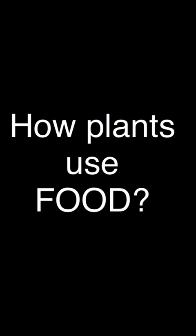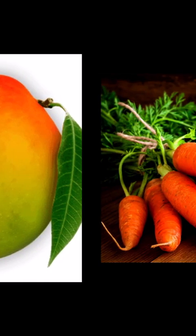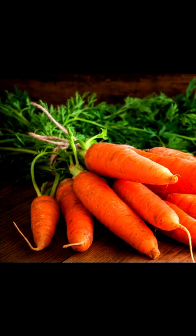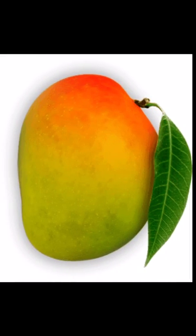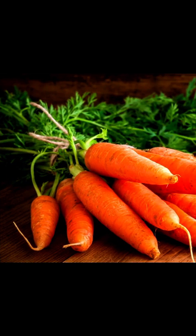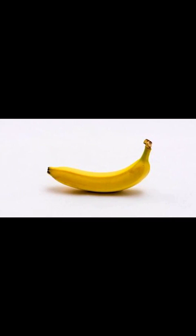Now, how do plants use food? The food prepared by a leaf is called sugar. This food is transported throughout the plant by stem and branches. A plant uses some amount of the prepared food to carry out its life processes, while the rest of the food is stored in fruit, leaves, stems or roots. So we consume such parts of a plant.